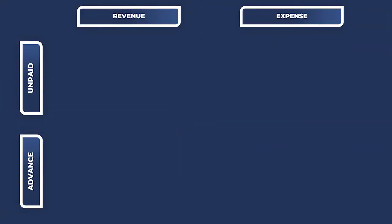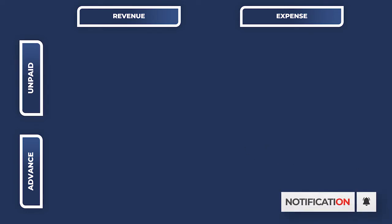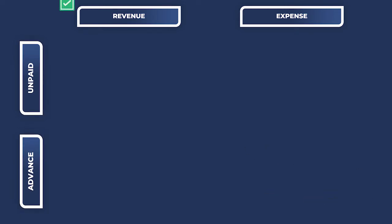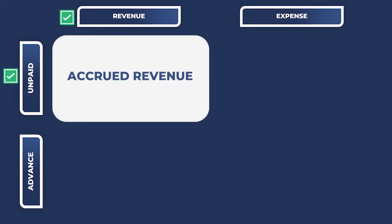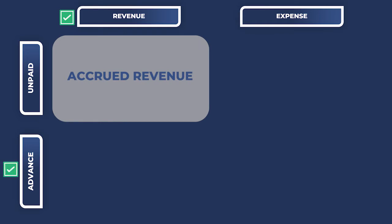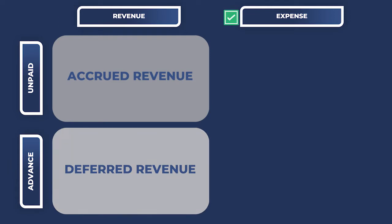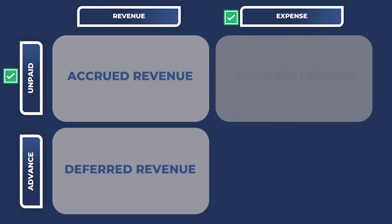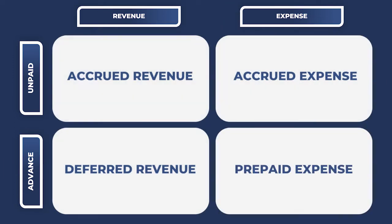The four types of adjusting entries under the accrual basis can be generally grouped into those affecting revenue and those affecting expenses. Further, these can be classified as to whether it was an unpaid transaction or if there is an advanced payment. When revenue is earned but payment is not yet received, it is classified as accrued revenue. When a customer pays in advance, it is classified as prepaid or unearned revenue. When an expense is incurred but not yet paid, it is an accrued expense. When the company pays in advance, it is a prepaid expense.